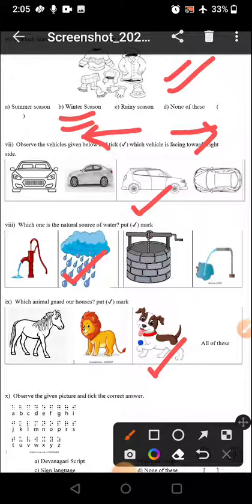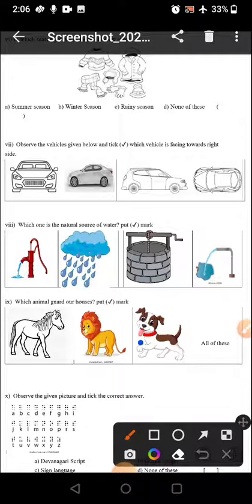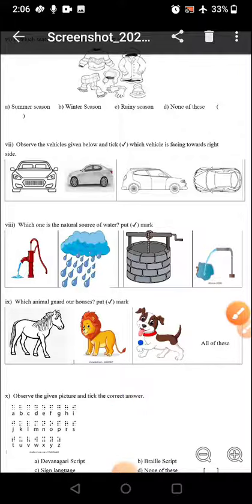Observe the given picture and tick the correct answer. This is braille script. So B is the right option. This is braille script which blind people use to read and write.